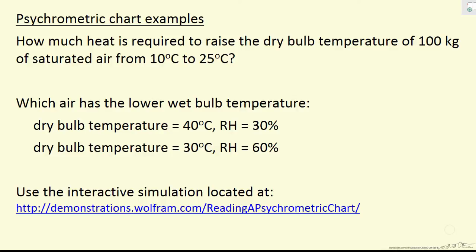I'm going to look at a couple of examples using a psychrometric chart as a way to increase your understanding of the way a psychrometric chart works and what kind of information it provides. The first one is how much heat is required to raise the dry bulb temperature for 100 kilograms of saturated air from 10 degrees C to 35 degrees C.